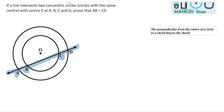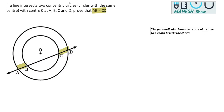What we have to prove is that AB is equal to CD. We need to show that the length AB is equal to the length CD.